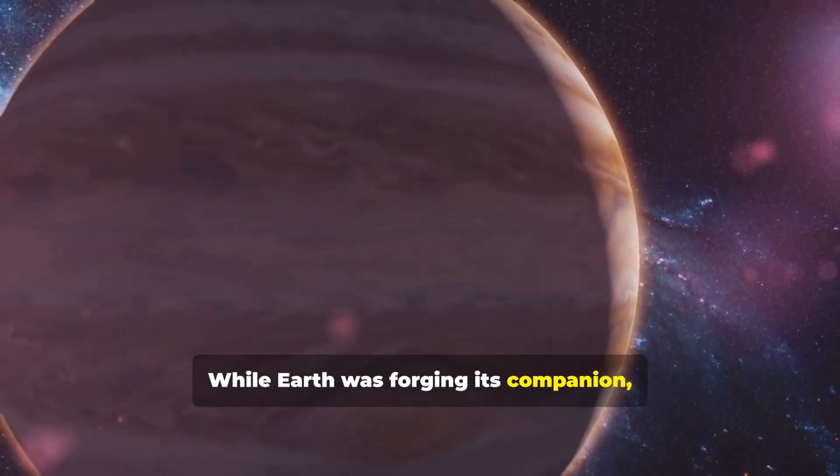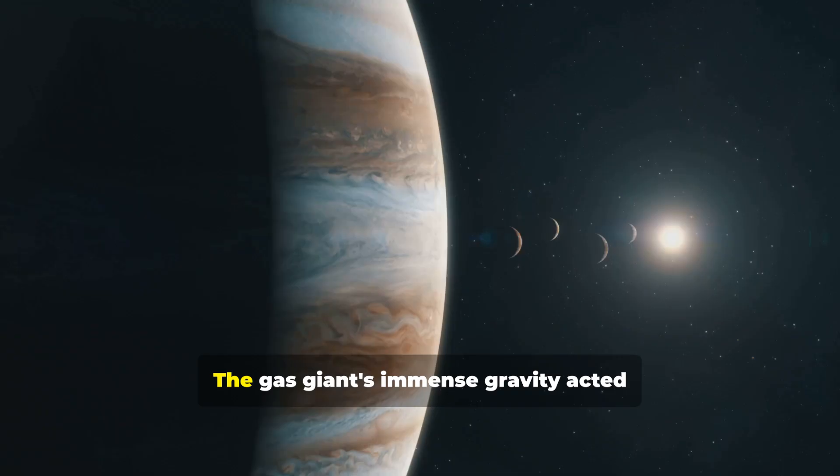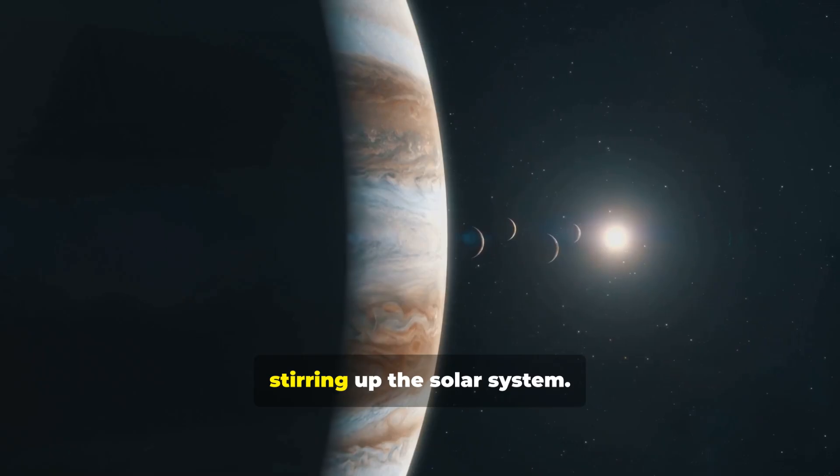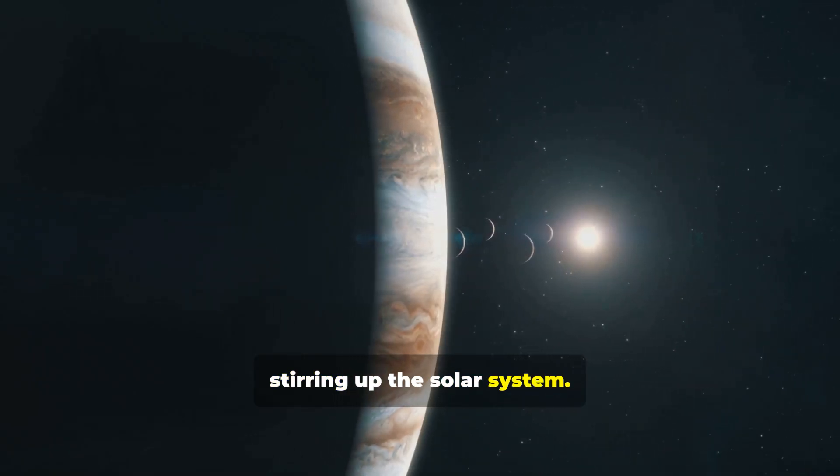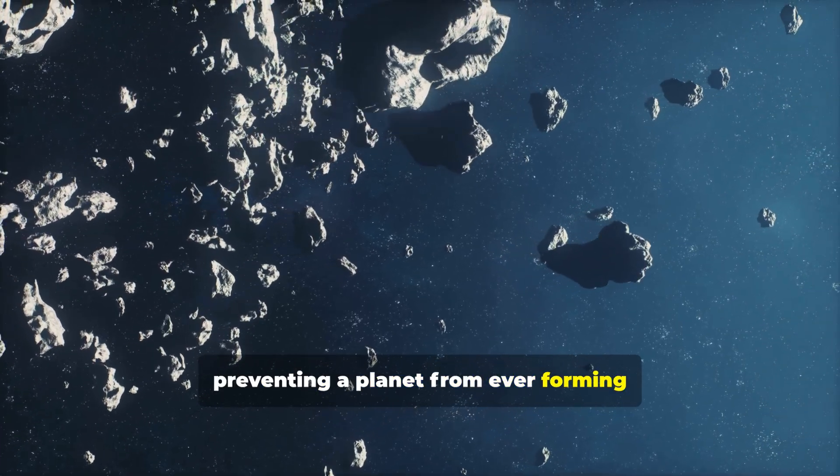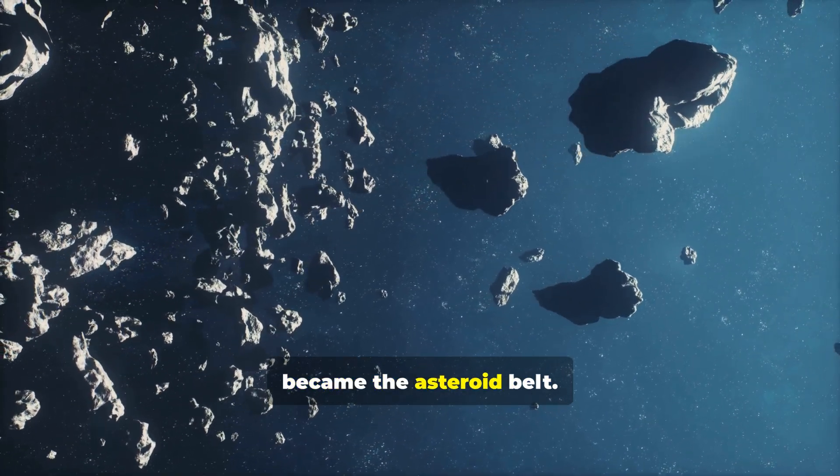While Earth was forging its companion, Jupiter was wreaking havoc elsewhere. The gas giant's immense gravity acted like a cosmic bully, stirring up the solar system. Its pull hurled countless asteroids out of orbit, preventing a planet from ever forming between Mars and Jupiter, the region that became the asteroid belt.